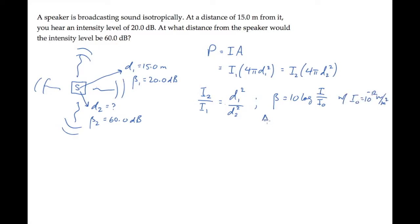The difference between two intensity levels, delta beta, is 10 log I2 over I1. We'll use this expression to solve for the unknown distance d2. If we rearrange this equation to solve for the ratio I2 over I1, we find it equals 10 to the delta beta over 10.